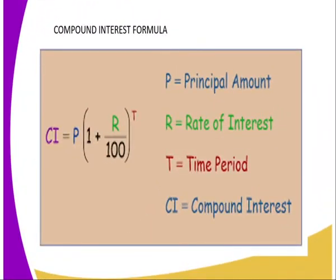The Compound Interest formula is: CI = P × (1 + r/100)^t. Here, P is the principal amount, r is the rate of interest, t is the time period, and CI is the compound interest.